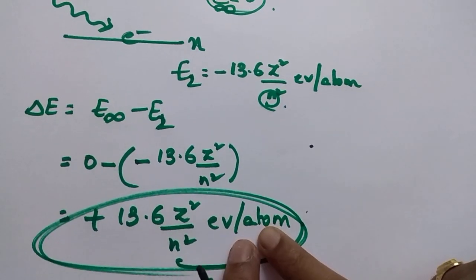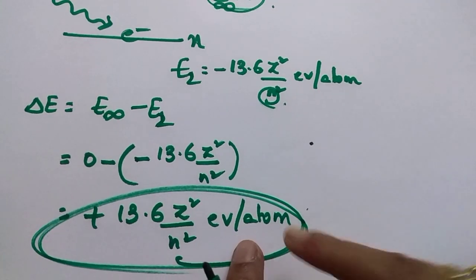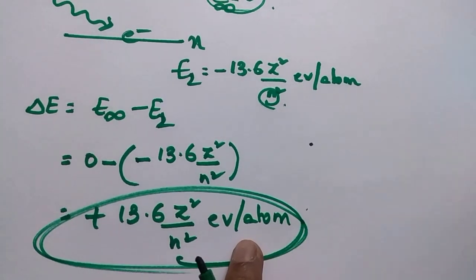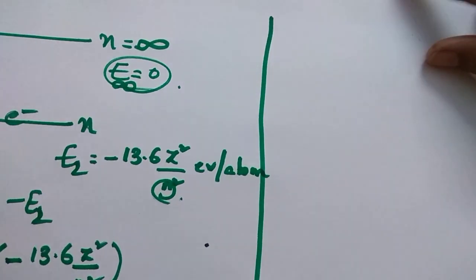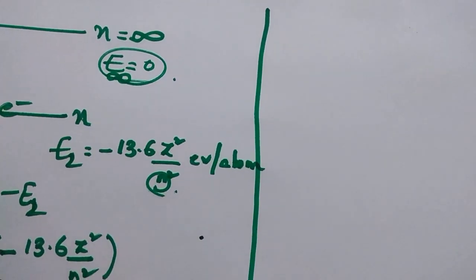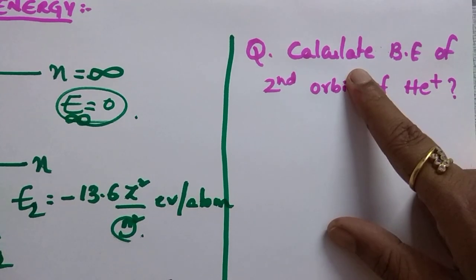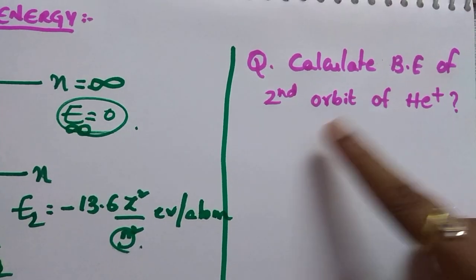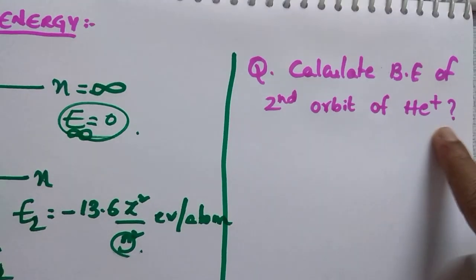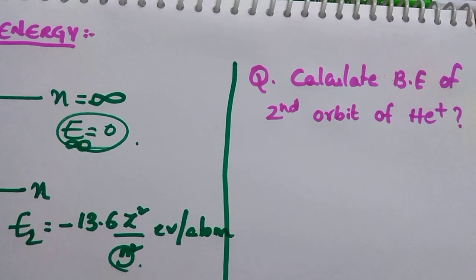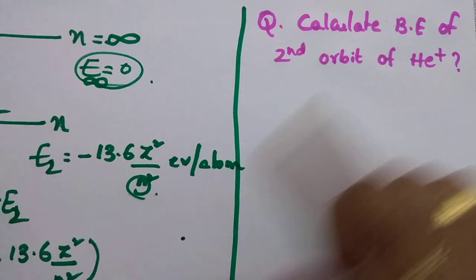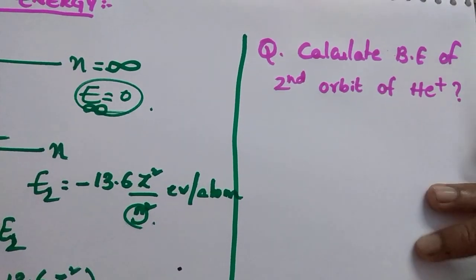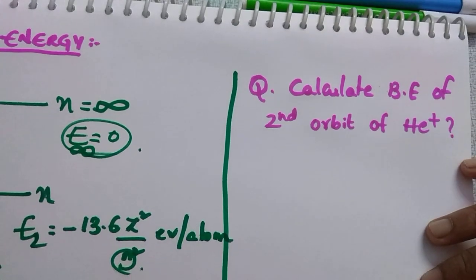If options are given in different units, convert as I explained earlier. Now I am going to give you a question — try to solve it: calculate the binding energy of the second orbit of He⁺. Use the formula and try this question. The solution will be discussed in the next video.